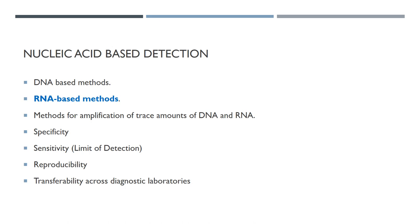With these methods, we can detect extremely low copy numbers of the virus, which can be from 5 to 10 copies per cell. They are very specific, very sensitive, and they can be reproduced and transferred across diagnostic laboratories. This is what happened during the pandemic.